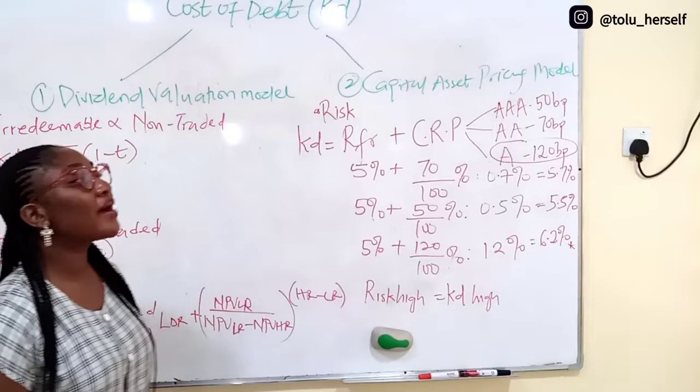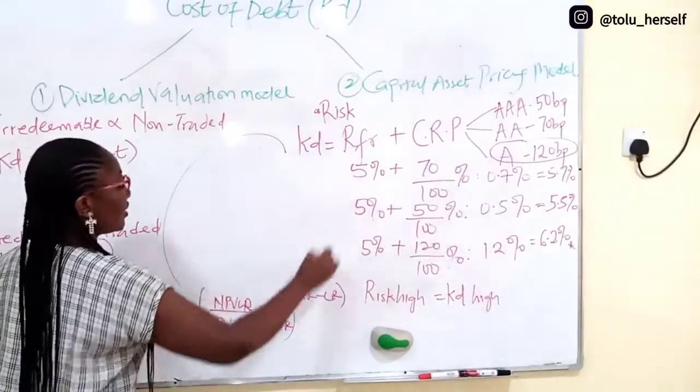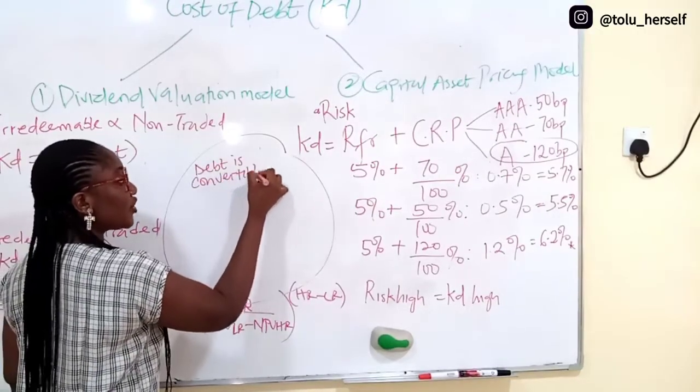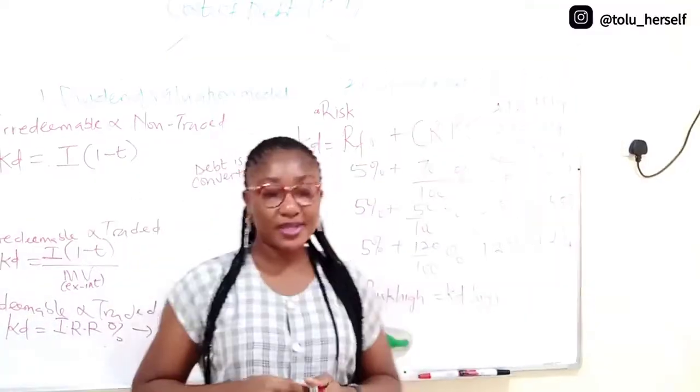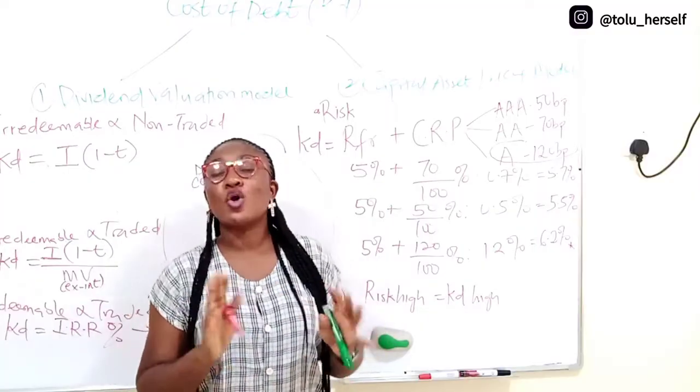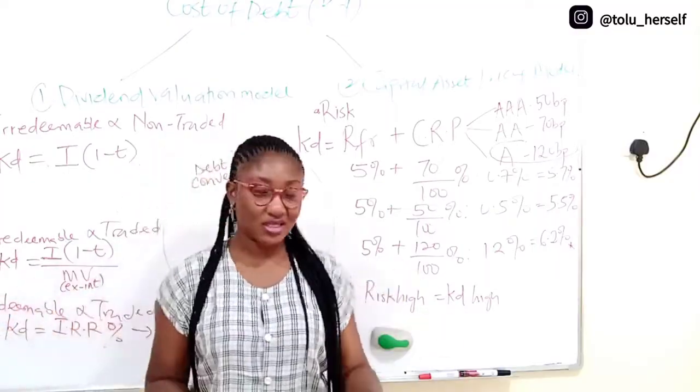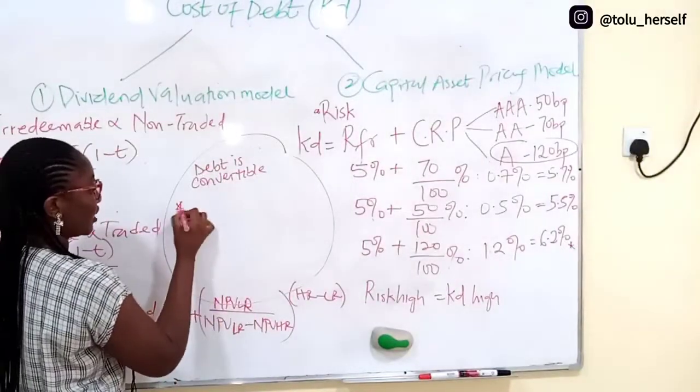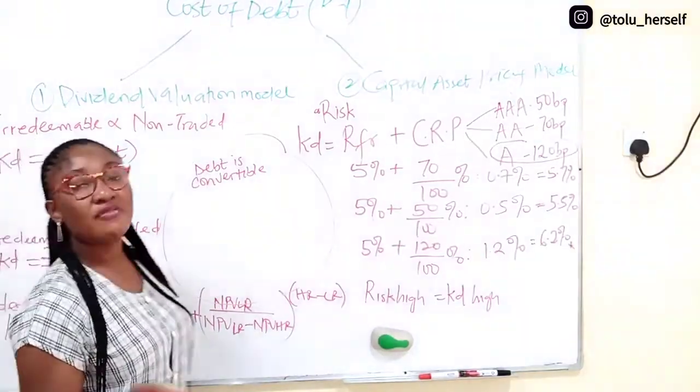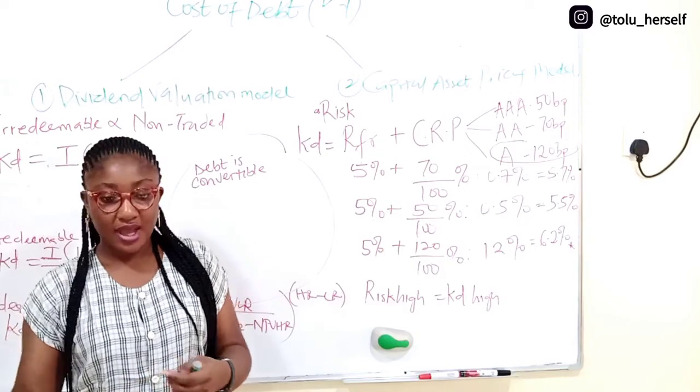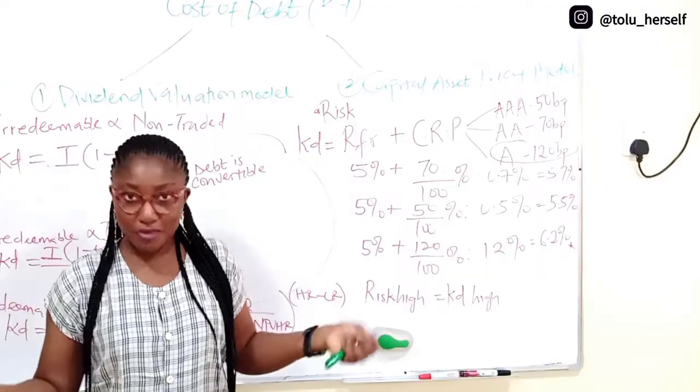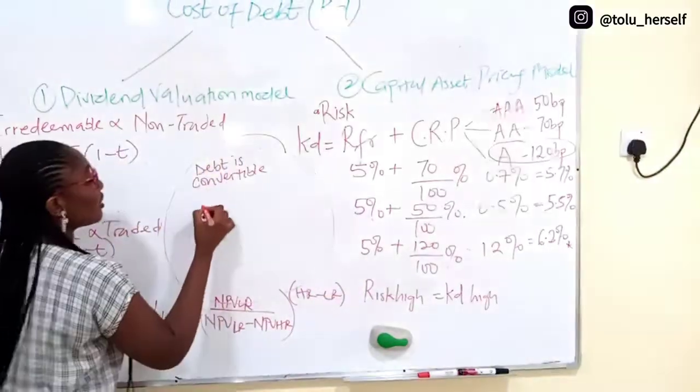There is also a situation where a debt is convertible. A convertible debt is a debt that needs to be redeemed, there is a date of redemption, but when that date arrives, the debt holder has the option to convert to cash or to convert to equity. So there is a formula for that to know whether to convert to equity or to use shares, because you pick the higher value.